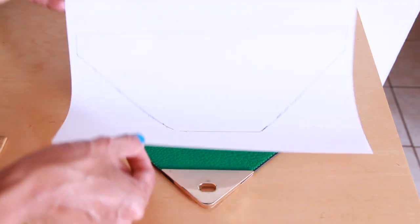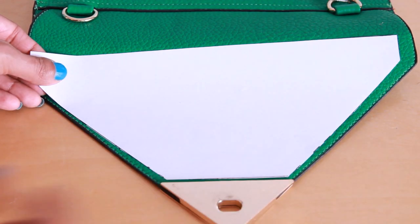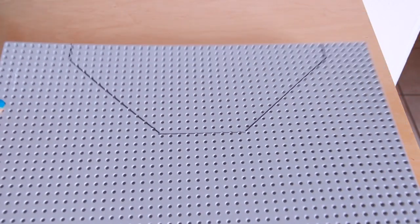Next, measure the flap and create a similar shape onto your piece of paper. Now trace your pattern onto the Lego plate, then cut it out.